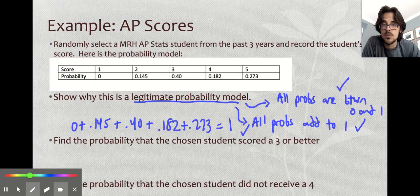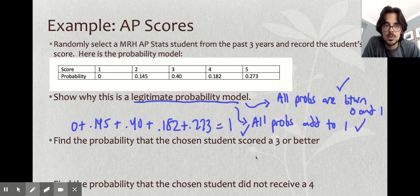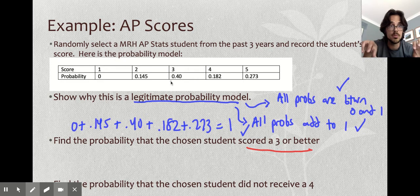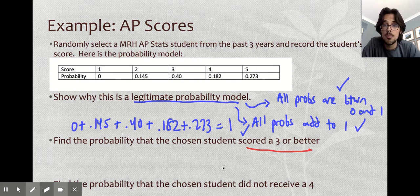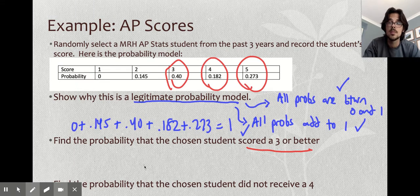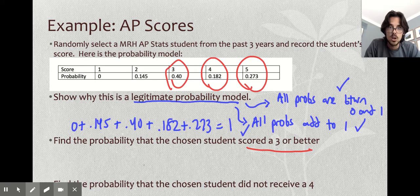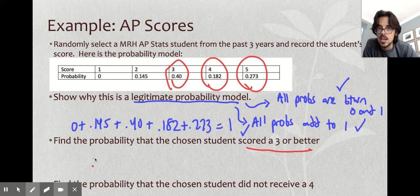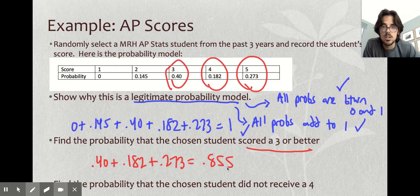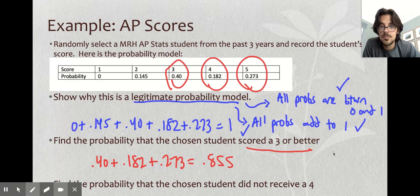They just ask you for a few basic things here. What's the probability that if you pick a kid at random who's taken my AP class, they've scored a 3 or better? Well, 3 or better. These are mutually exclusive. You can't get a 3 and also get a 4. Your score can't be both at the same time. So all I need to do is add up all the ones I care about. Add up the 3s, add up this, add up this, and that's going to get you your total probability. So if I do those, and when you write these down, show your work, always show your work, no matter how basic it is, it's going to be 85.5%.